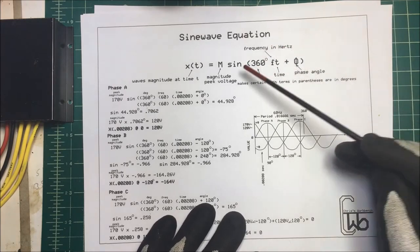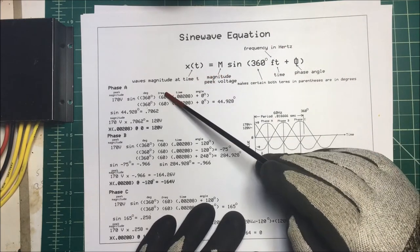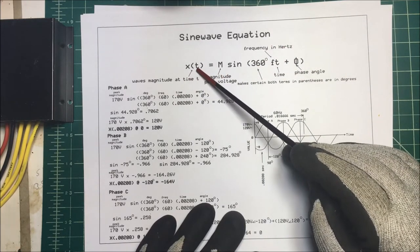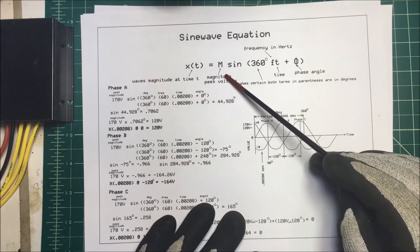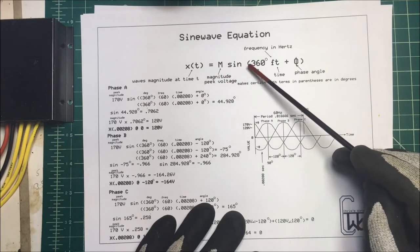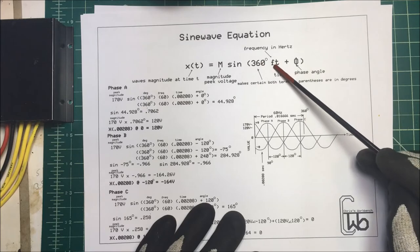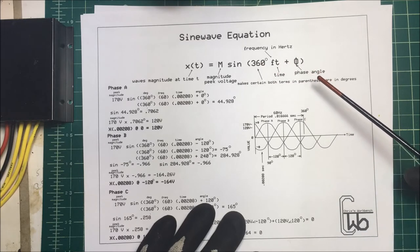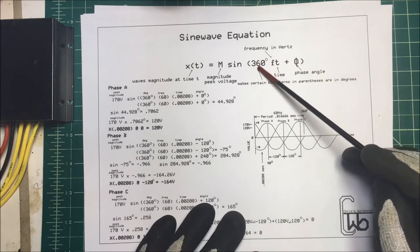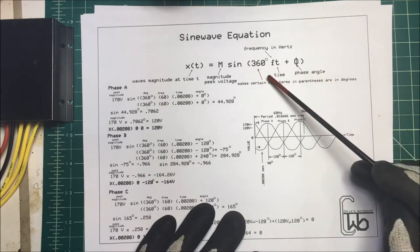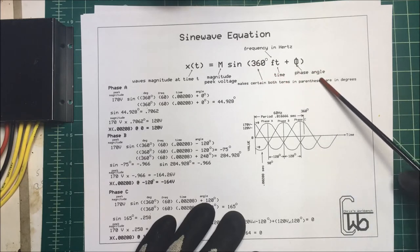Let's talk about our sine wave equation. x(t), that's the wave magnitude at time t, equals M, our magnitude or peak voltage, times the sine of 360 degrees times our frequency times the time plus our phase angle. This 360 is just in there to make certain that both terms in these parentheses are going to be in degrees.